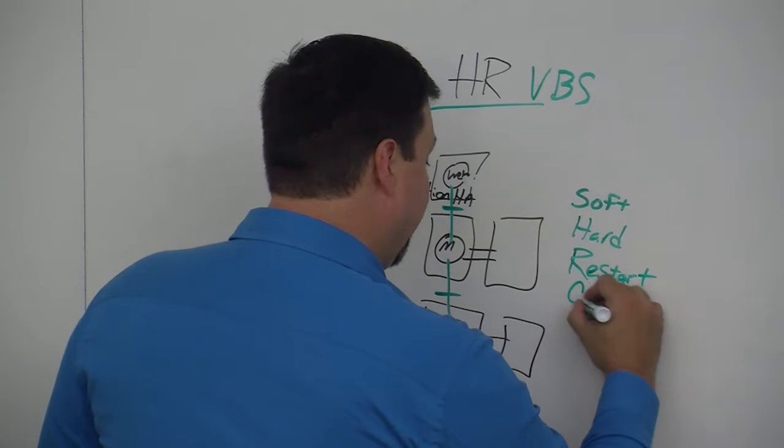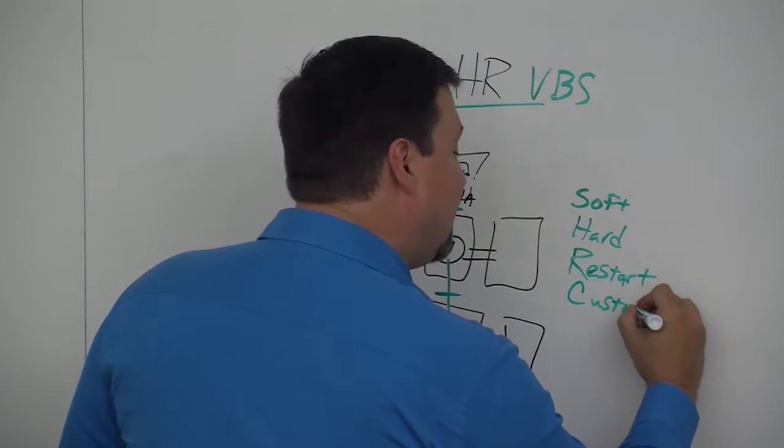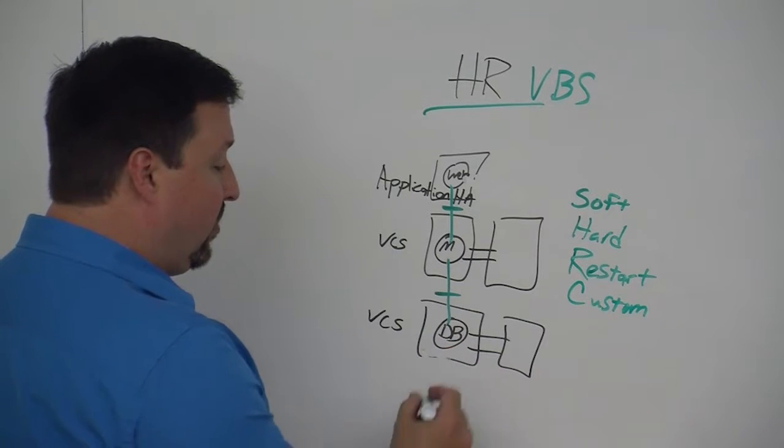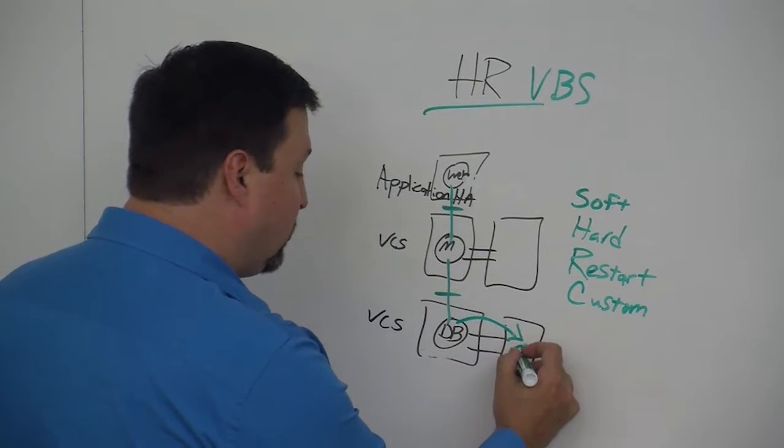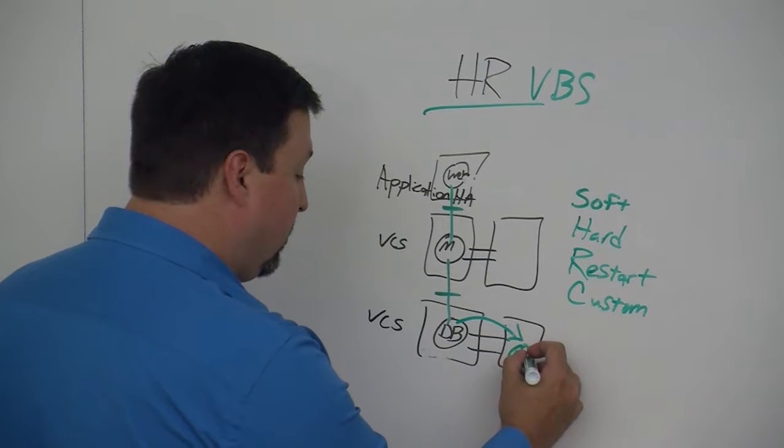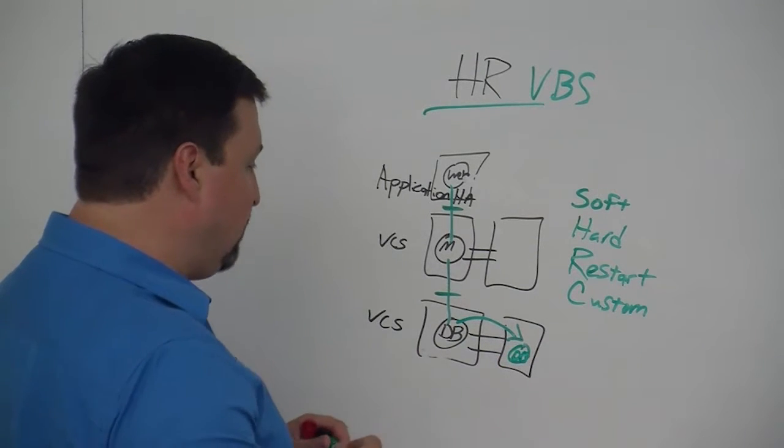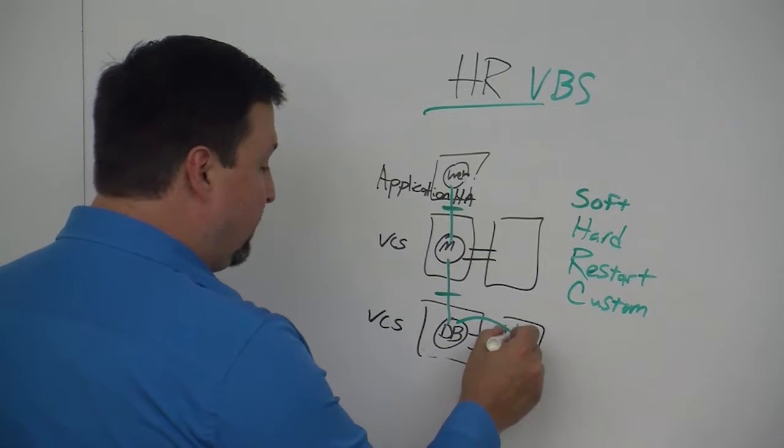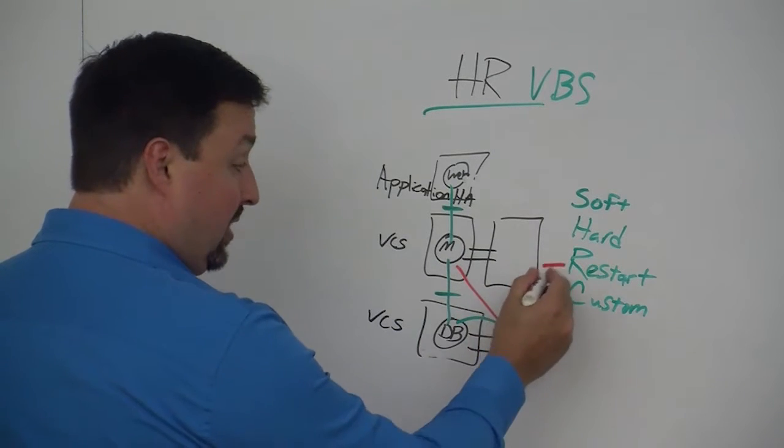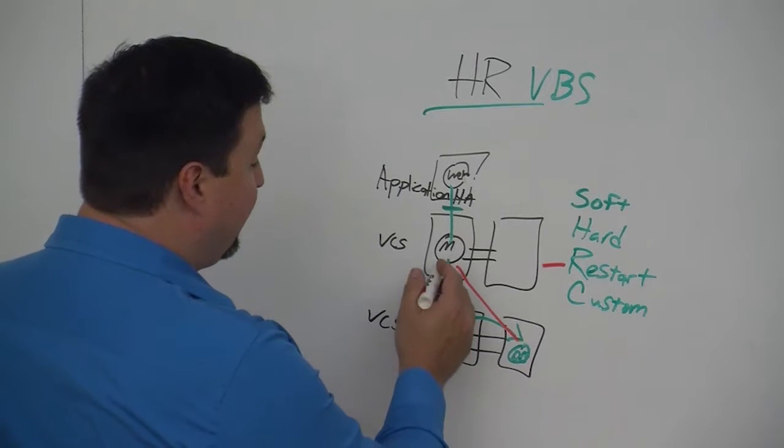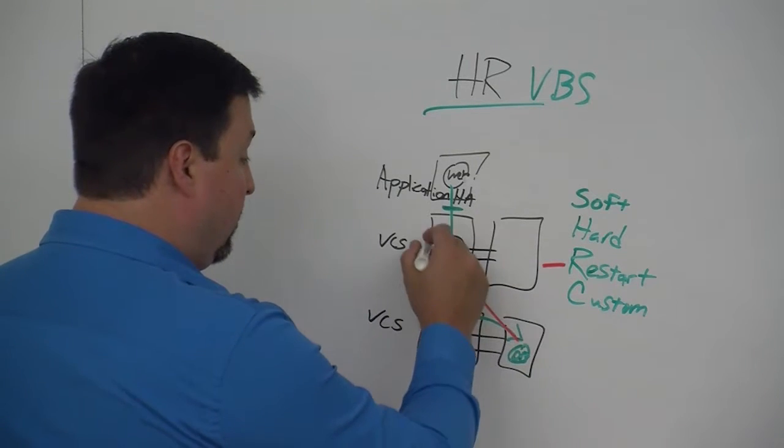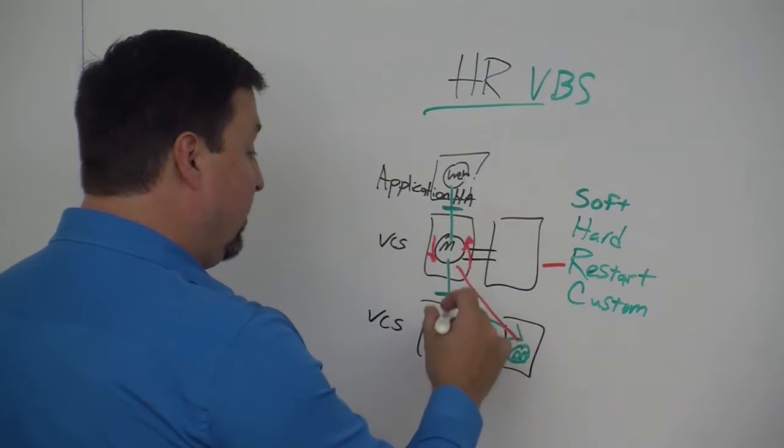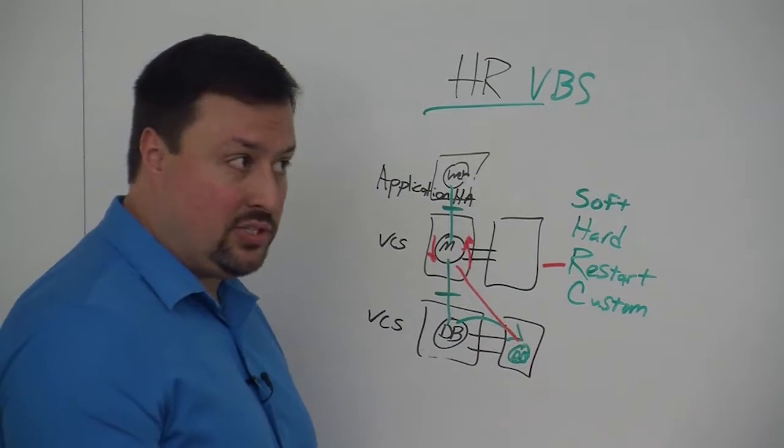Restart and custom. I'll give you an example of how this works for the restart. For the database, it's in a VCS failover cluster. Something happens to the database and it fails over from one node to the other. As soon as that database comes back online, from a VBS perspective, we're going to connect to the middle tier and say hey, bring your middle tier down. Once it's down, bring it back up again to re-establish a persistent connection. Make sure that you can connect from the database to that middleware box.